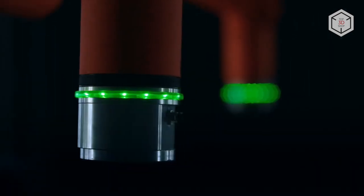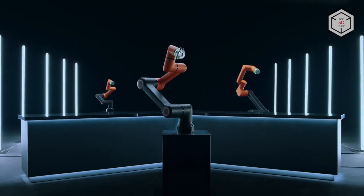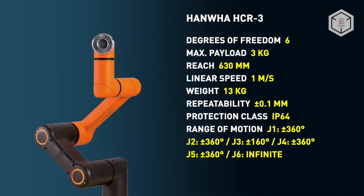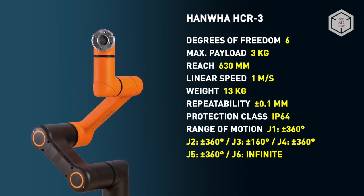Today, the line of robots has two more machines, HCR3 and HCR12. By the way, the numbers in the names of Hanwha cobots relate to their capacity in kilograms.